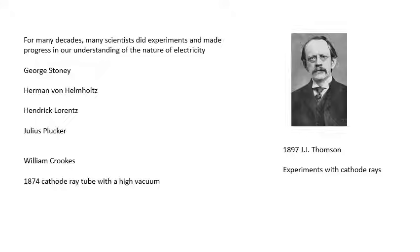People like George Stoney, Helmholtz, Lorentz, a guy called Plucker, William Crookes - he invented this vacuum tube that we can use to create beams of electrons - and then this guy here, J.J. Thomson. He was the first person to get a value for e over m, which is the specific charge of an electron.